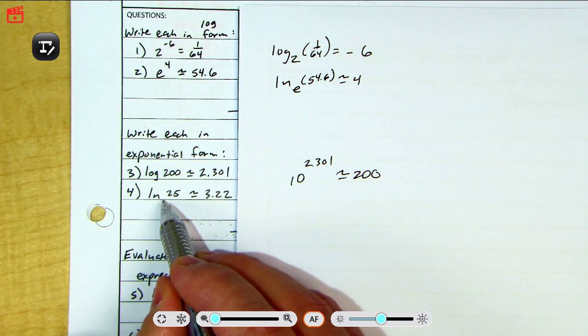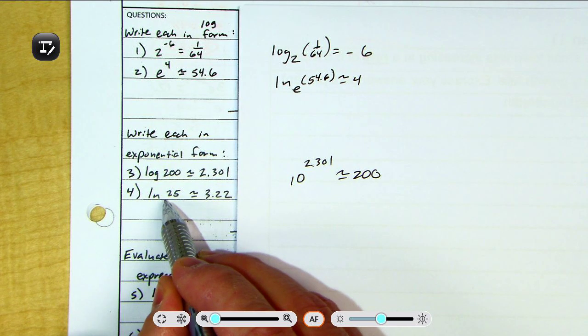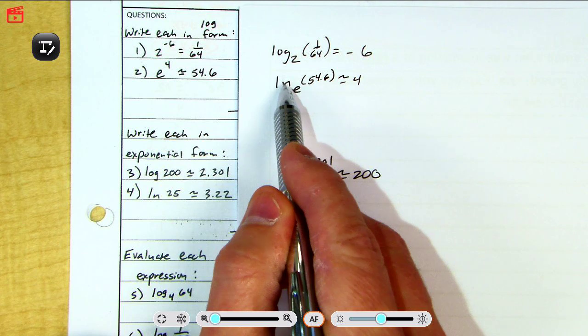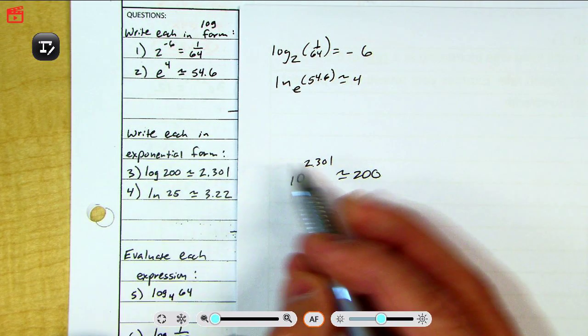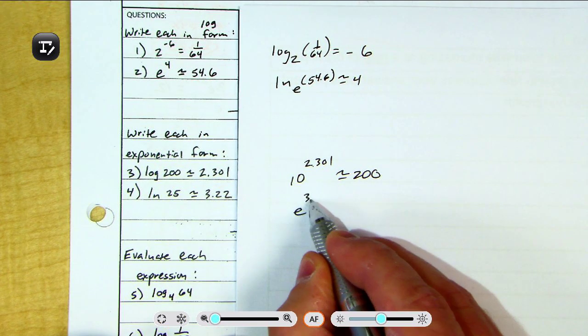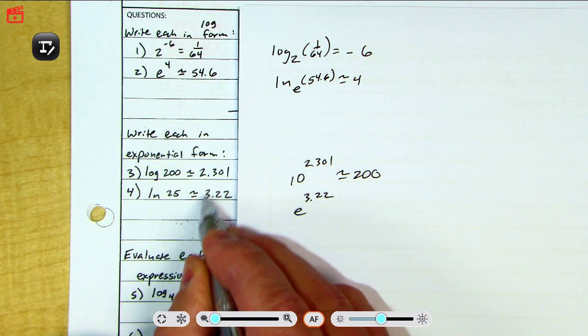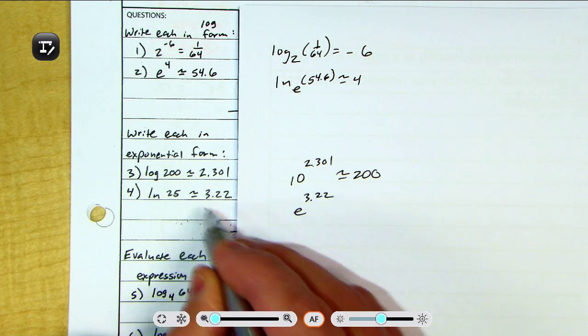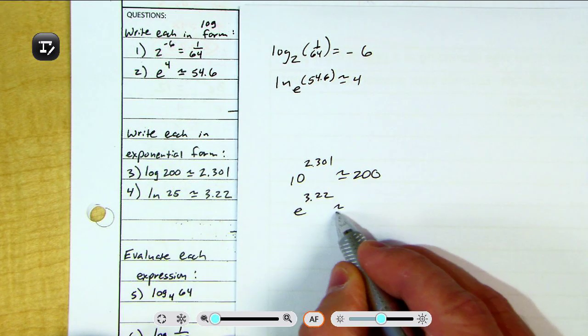Same thing here. What's the base on natural log, boys and girls? Somebody say e. The base here is an e. You see how the natural log, the base is always e? So we start at this base. I write e. Go under the equal sign. That isn't a logarithm. It is an exponent. So that is an exponent. And then, loop it back. So that is approximately equal to 25.